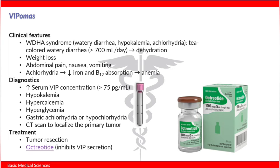Clinical features: the first clinical feature of VIPomas is WDHA syndrome. WDHA stands for watery diarrhea, hypokalemia, and achlorhydria. The patient will have tea-colored watery diarrhea, usually more than 700 mL per day, which will lead to dehydration. The patient will also have weight loss, abdominal pain, nausea, and vomiting.